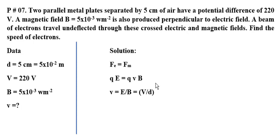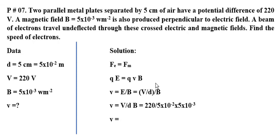क्योंके E equal to V over D होता है. तो वो हमने यहां पे substitute कर दी. बाकी B की value है. यहां पे अगर हम इस तरह से लिख देए V over D into B. तो V की value हमने 220 place कर दी, separation 5 cm है वो place कर दी, magnetic field 5 milli tesla है वो हमने place कर दी. After solving all of these, we found result 8.8 into 10 to power 5 meter per second. This is the speed of the electrons with which they are crossing these crossed electric and magnetic fields.